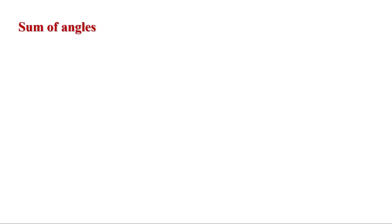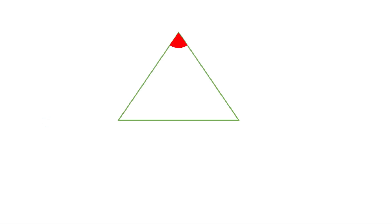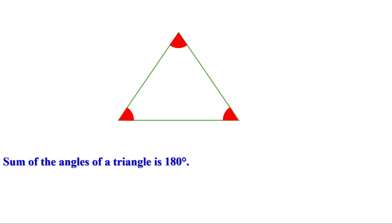Now let us go to the next section: sum of angles. Let us take a triangle at first. What is the sum of the three angles of a triangle? We have already learned that the sum of the three angles of a triangle is 180 degrees.